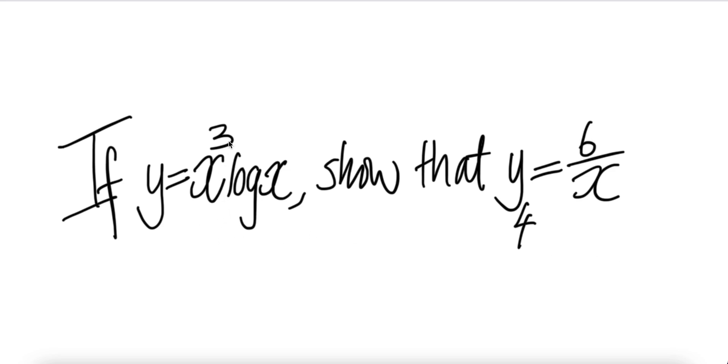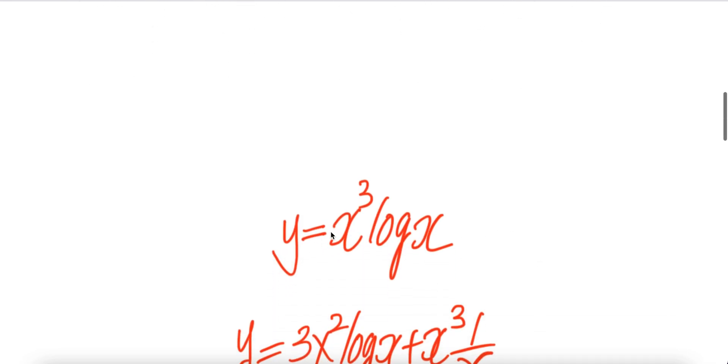If y is equal to x cubed times log x, show that y4 is equal to 6 divided by x. Here y subscript 4 means the fourth derivative of y respect to x. Here is the given function.